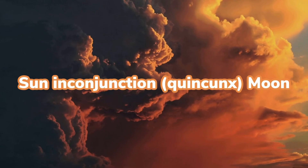The next aspect is the sun in conjunction with the moon — but wait, this is different from the sun conjunct moon discussed earlier. This is when the sun and moon are right next to each other in adjacent signs. So this could be someone with their sun in Scorpio but their moon in Sagittarius, or sun in Aquarius but moon in Pisces. They're so close to each other that one takes over the other — the sun is the most powerful planet in astrology, so the masculine energy dominates the feminine energy.